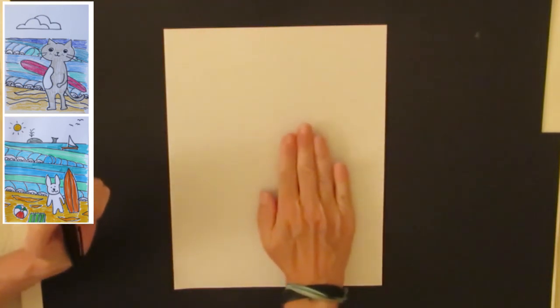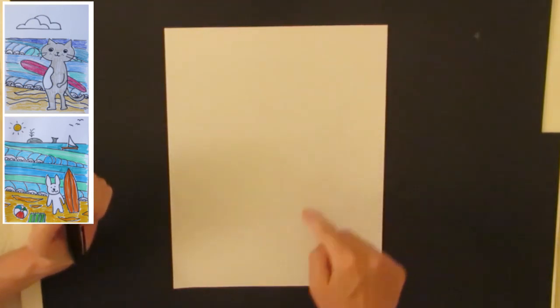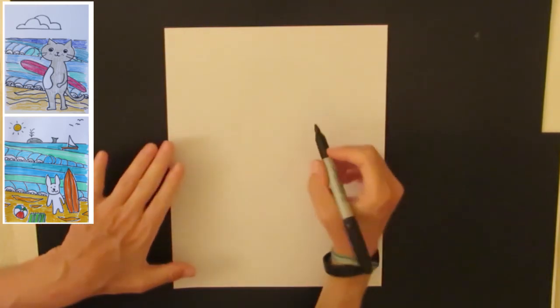First we start with our main character. Our main character is going to go somewhere on the page around here. I'm drawing a cat, but you can draw whatever you like.